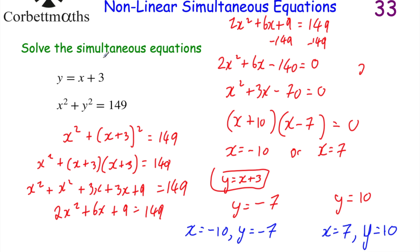If you're asked to find the coordinates where the straight line y equals x plus 3 and the circle x squared plus y squared equals 149 intersect, then the coordinates would be (−10, −7) and (7, 10).